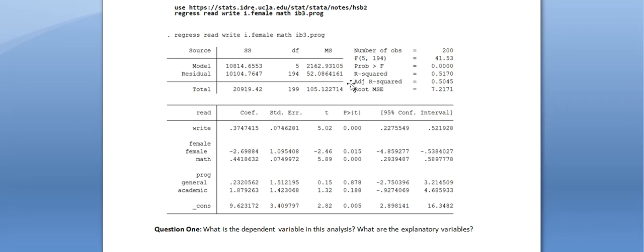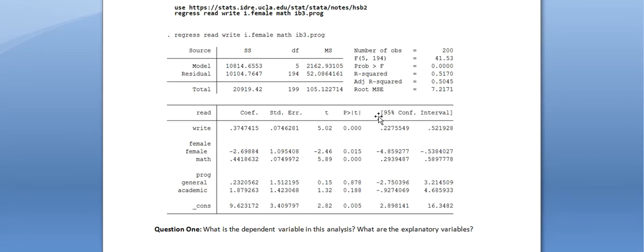You can ignore the adjusted R-squared, the root MSE, and the other statistics at the top — you don't need to understand those to read a regression's results. In the main body, each variable is assigned a coefficient and a p-value. Ignore the standard error, the t-score, and the 95% confidence interval values — you don't need those at this level. At an undergraduate level, it's sufficient to look at the p-value and the coefficients.